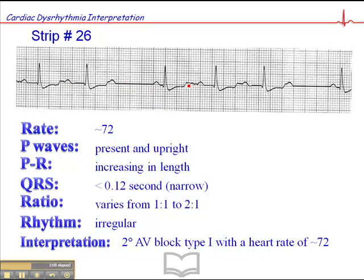You might have noticed the T-wave here, which is kind of flattened. The T-wave morphology is completely and utterly irrelevant to our rhythm interpretation — just keep that in mind. The key here is the dropped P-wave, prolonged PR interval before, shortened PR interval afterwards.